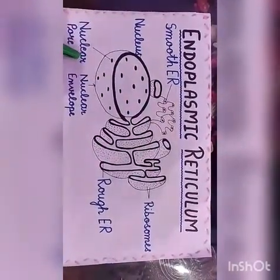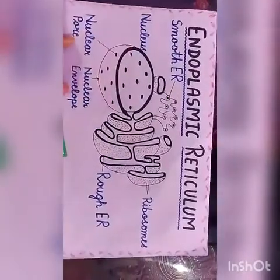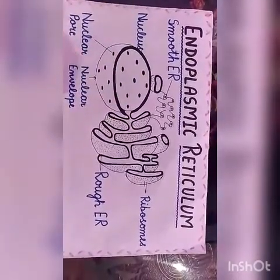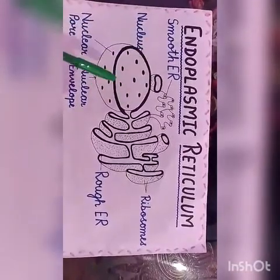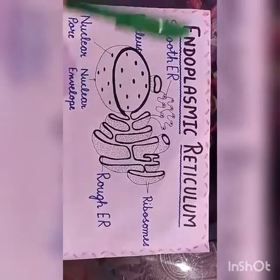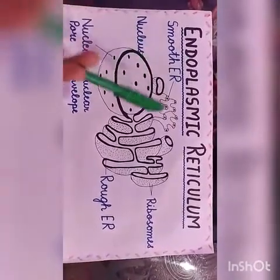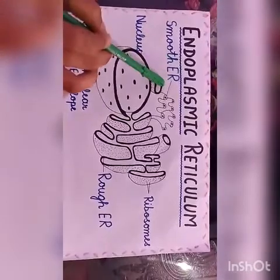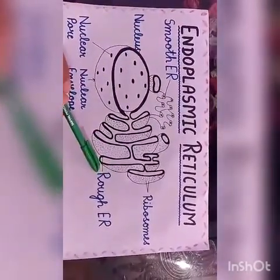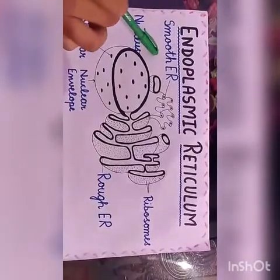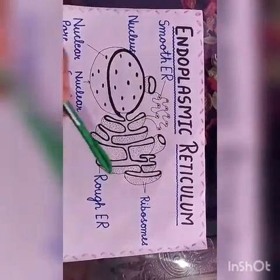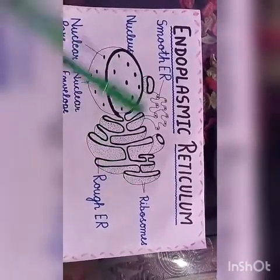Let's get started with endoplasmic reticulum. Endoplasmic reticulum is a continuous membrane system that forms a series of flat sheets within the cytoplasm of eukaryotic cells and serves multiple functions, being particularly important in the synthesis, folding, modification and transport of proteins. It is made up of two subunits — rough endoplasmic reticulum and smooth endoplasmic reticulum. Rough ER is named for its rough appearance, which is due to ribosomes attached to its outer surface.